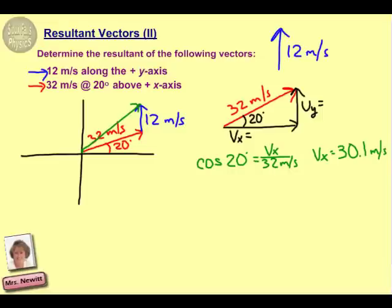We can repeat the same thing for the vertical component, except that the vertical component is opposite. So opposite would be using the sine. And that would be our vertical velocity divided by our hypotenuse of 32. And that gives us a vertical component, then, of 10.9 meters per second.